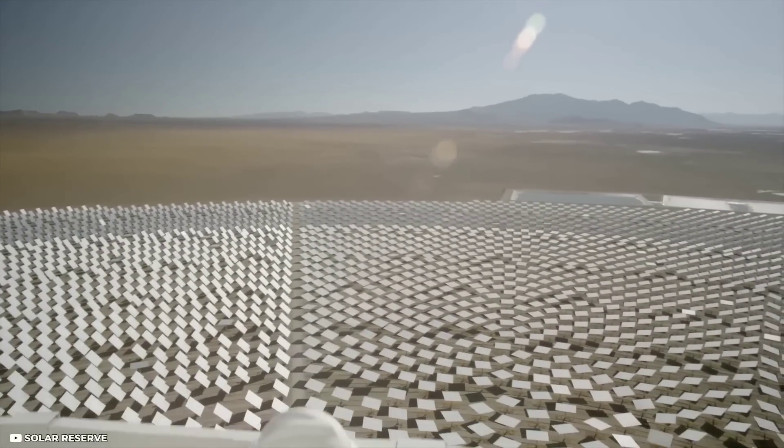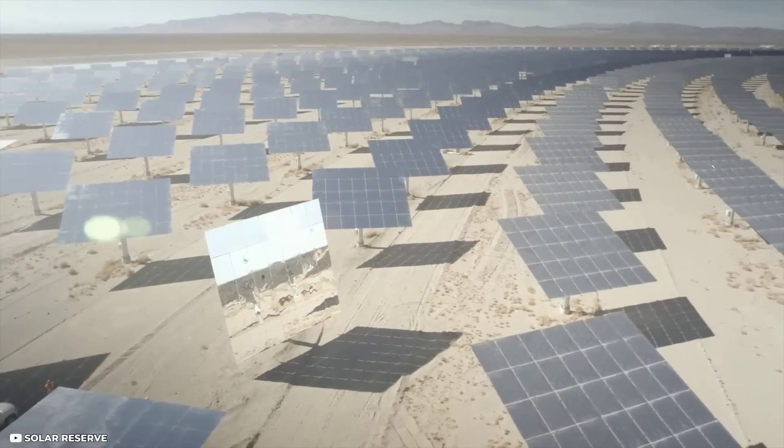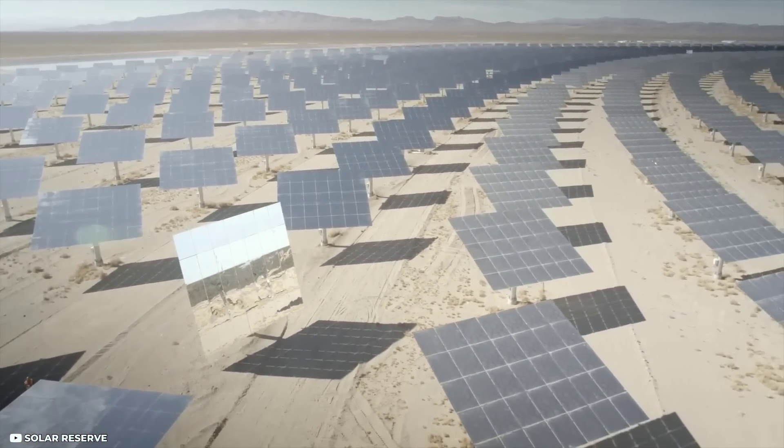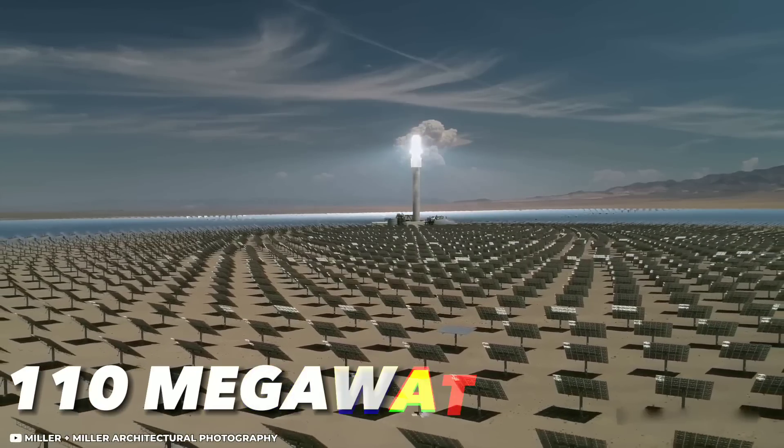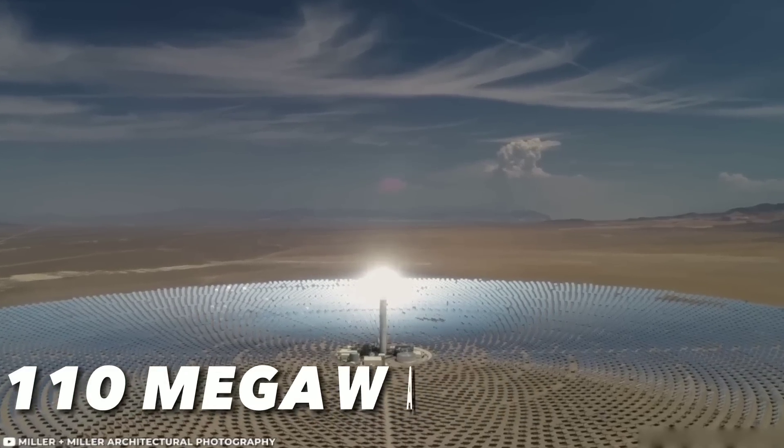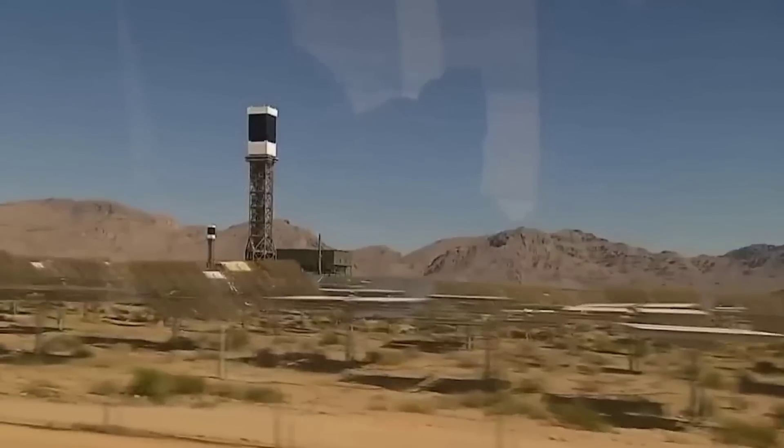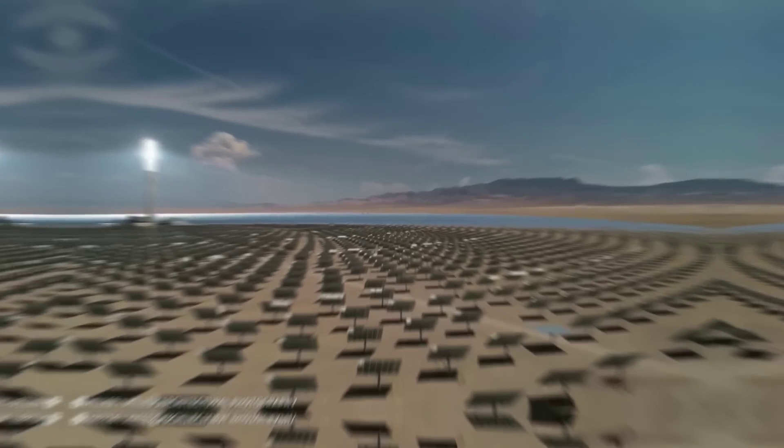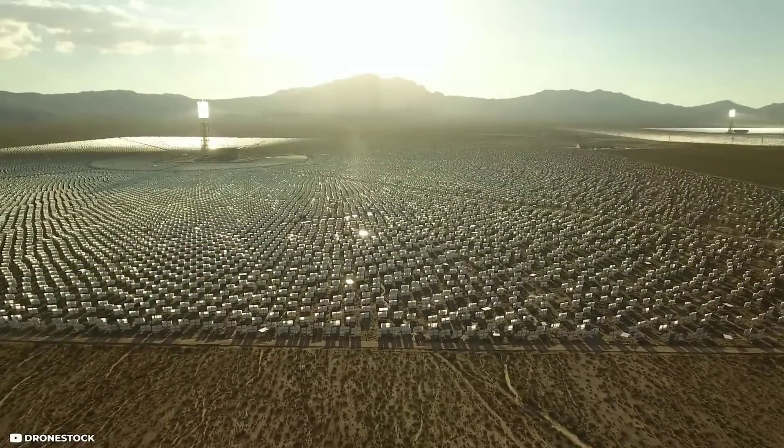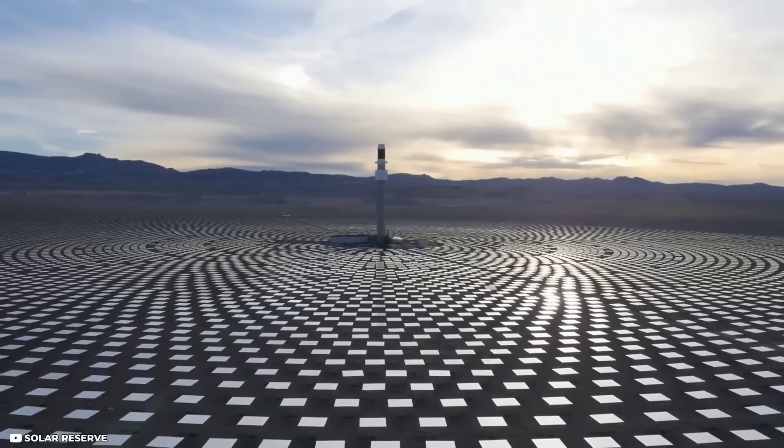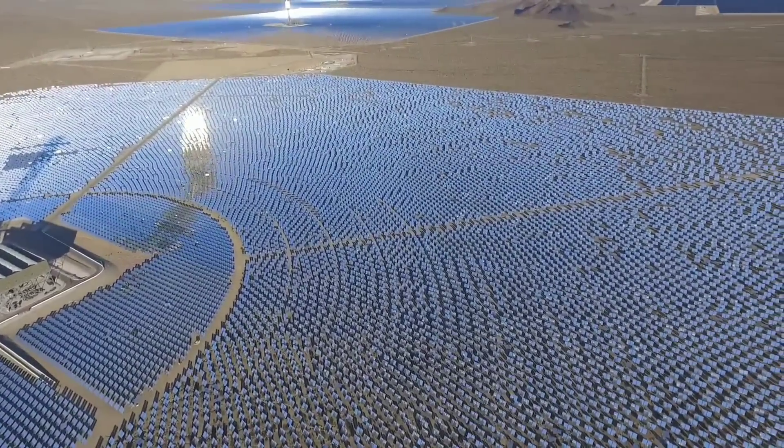Solar thermal power plants use mirrors to reflect and concentrate sunlight onto a receiver, where it heats up a fluid that drives a turbine to generate electricity. The Crescent Dune Plant had a capacity of 110 megawatts. It was not only the first of its kind in the U.S., but also the world's first commercial solar power plant with a central tower and molten salt energy storage. This innovative technology allowed the plant to store excess heat in a tank of molten salt and use it to produce electricity even when the sun was not shining.